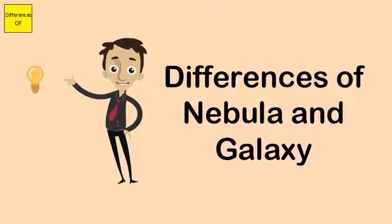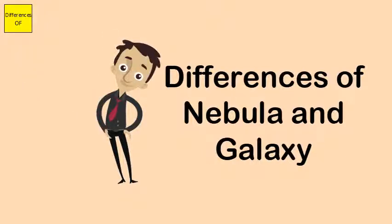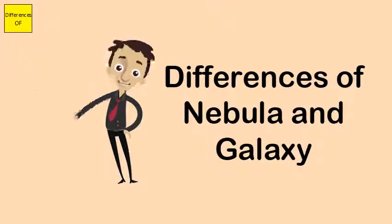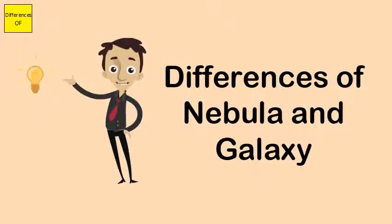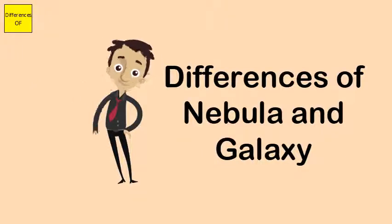Galaxies are classified as spiral, elliptical, and irregular. Nebulae are categorized into types: emission nebulae, HII regions, supernova remnants, and dark nebulae.